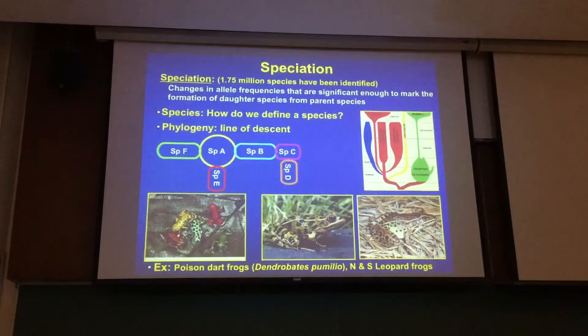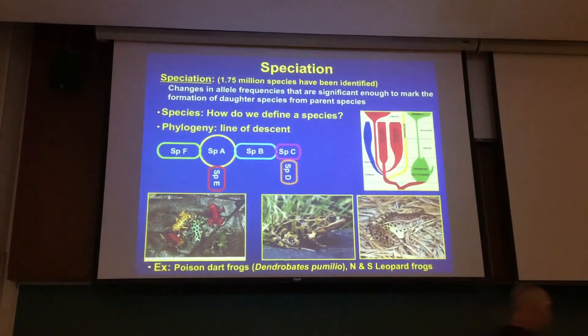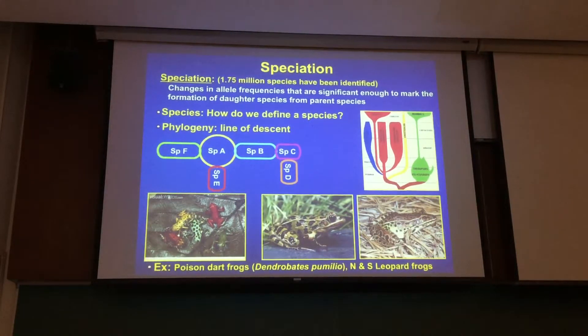Here's the thing about phylogenies: they can tell us an evolutionary history, but rate points and starting points are really tough.